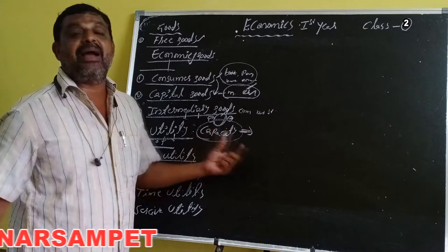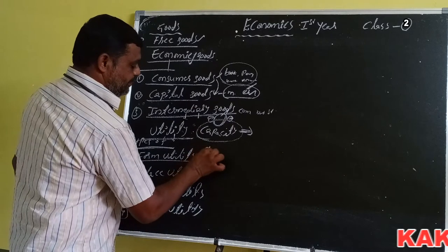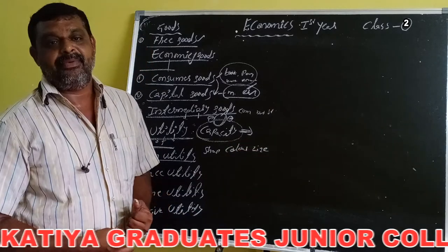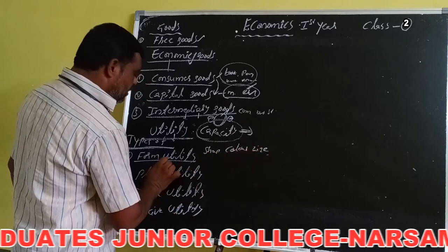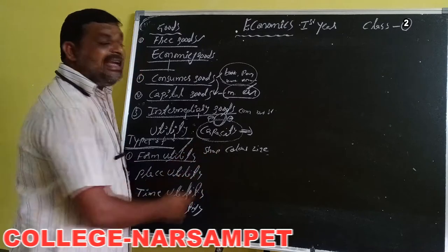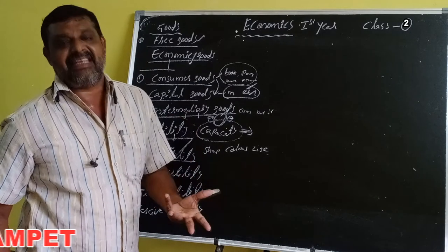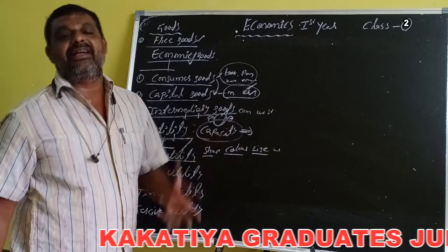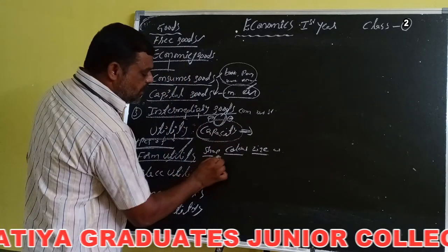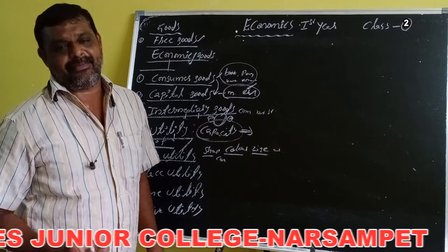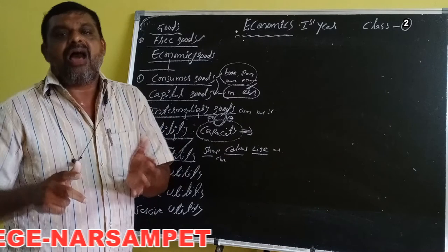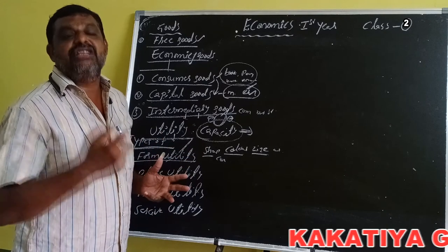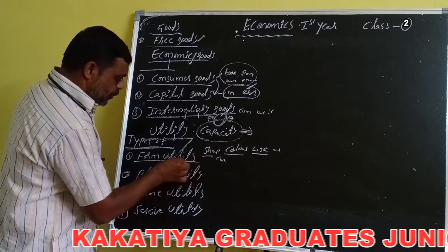Form utility is when utility is created by changing the shape, color, size, etc. of a commodity. For example, the conversion of a wooden log into a chair or table. Another example: the conversion of a stone into a statue. These are examples of form utility.